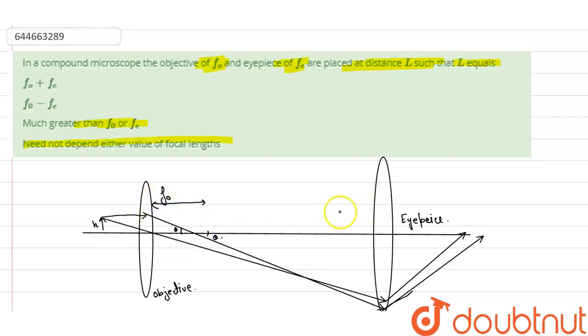So this becomes B dash and A dash. This distance is Fe. And the distance between these two is L.